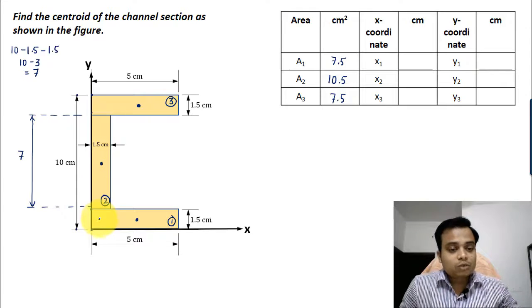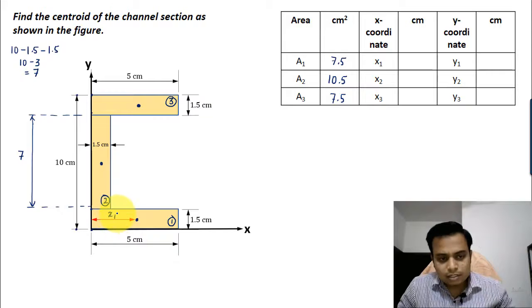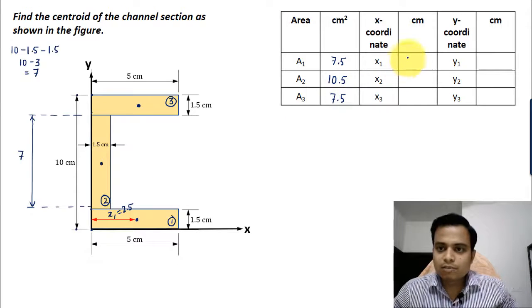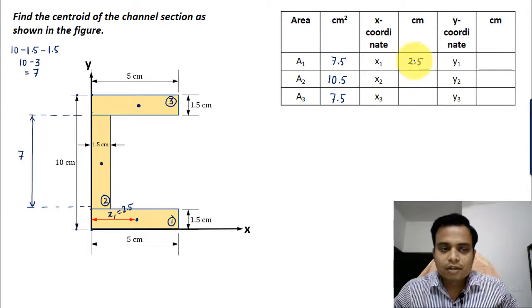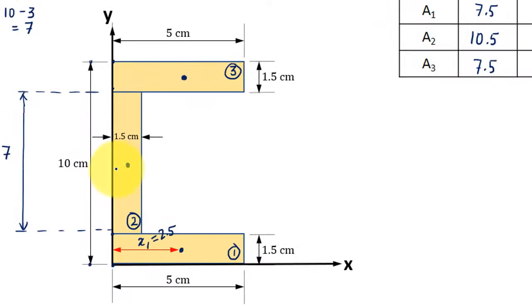Now let's think about the x coordinate. This is going to be x1, and this is pretty simple: x1 will be equal to half of 5, which is 2.5.